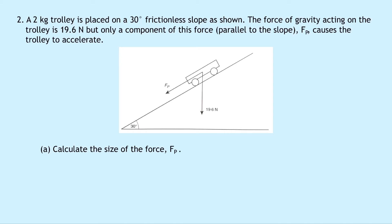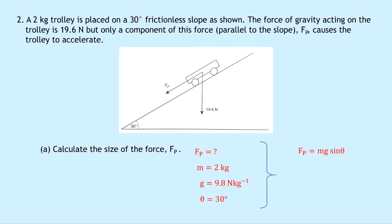Question two says a two kilogram trolley is placed on a 30 degree frictionless slope. The force of gravity acting on the trolley is 19.6 newtons, but only the component parallel to the slope, Fp, causes the trolley to accelerate. Part a says to calculate the size of the force Fp. Writing down what we know: mass is 2 kg, g is 9.8 N/kg, and the angle theta is 30 degrees. Our equation is Fp = mg sine theta.